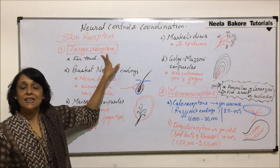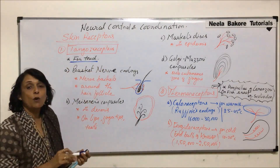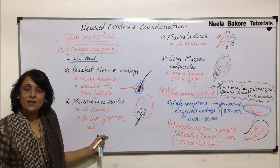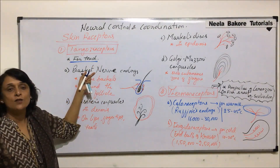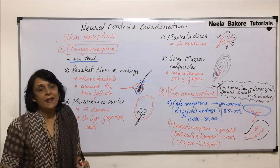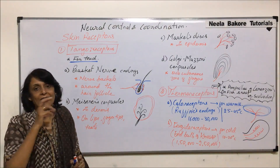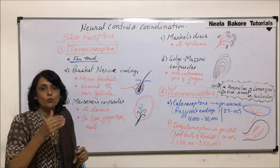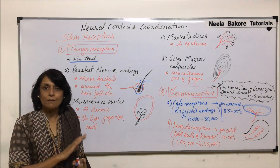The first category is tangoreceptors. Tangoreceptor is the term used for receptors which are responsible for detecting the stimuli of touch. There are certain receptors on skin at different locations responsible for perception of touch. The thing which is common across all skin receptors is there is a nerve ending, and that nerve ending can be encapsulated or it can remain free — that difference is what makes each a different kind of receptor.